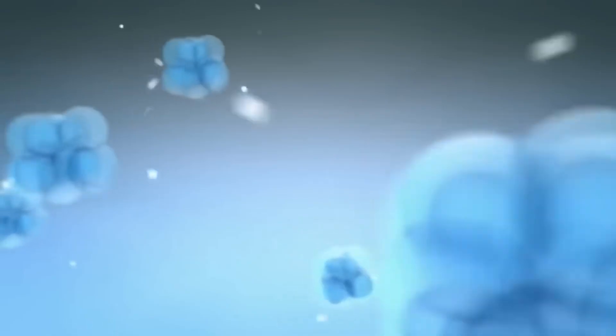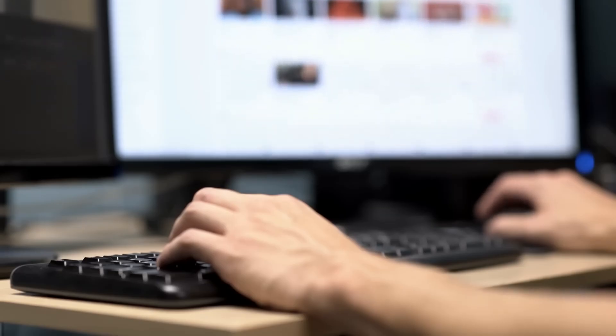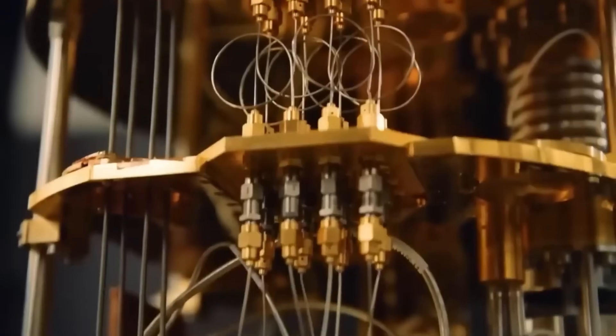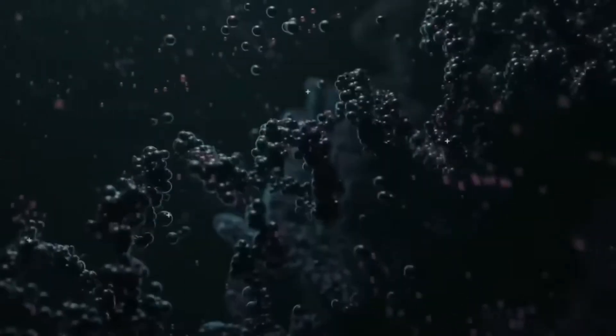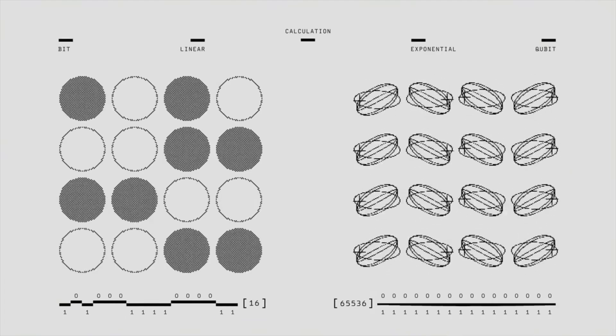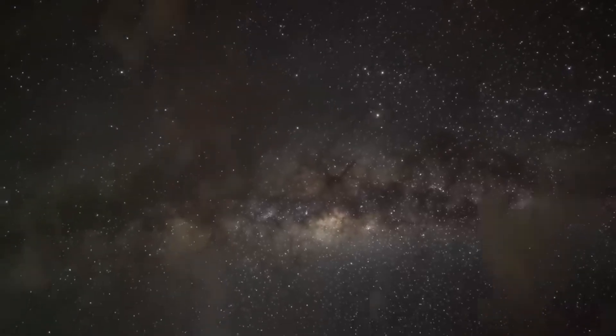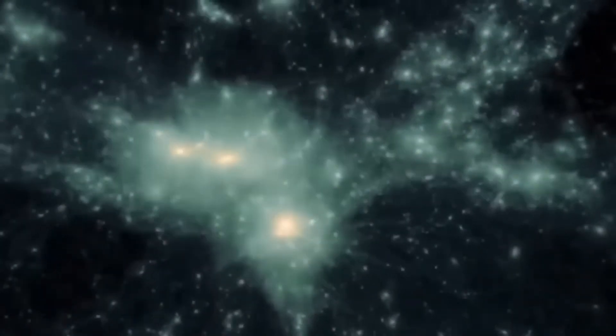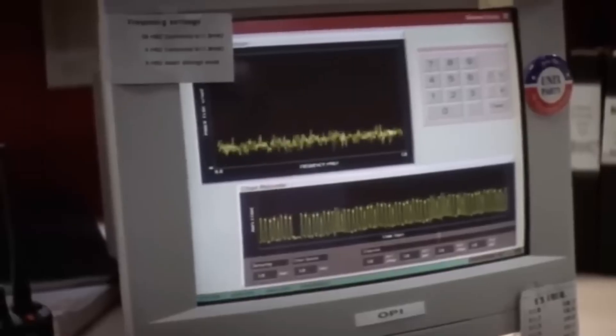So imagine this: if a classical bit is like standing at a fork in the road and having to choose one path, a qubit is like being able to walk down both paths simultaneously. Only when you reach the destination do you know which path you took. When we combine many qubits, their potential states grow exponentially. Two qubits can hold four states, three qubits can hold eight, and with just 300 qubits, you could represent more states than there are atoms in the entire observable universe. While a classical computer has to try every possibility one by one, a quantum computer can hold all possibilities in superposition at once and then let nature itself find the right answer.